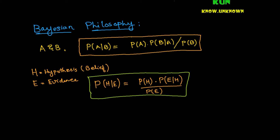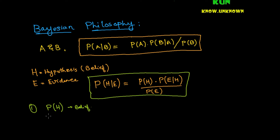Now let's take some real-life examples to make sense of this. Example one: let's say you are going for an interview and you have a certain pre-belief about that company — obviously it's a good company, that's why you're going for the interview. You have a certain basic belief, and I call the distribution of that belief P(H). This is the preconceived idea, the prior belief that you are holding.